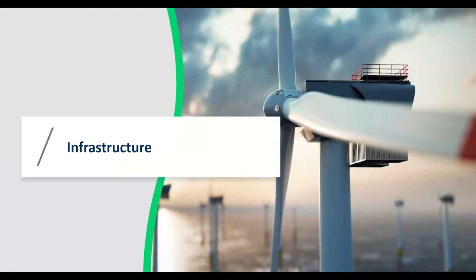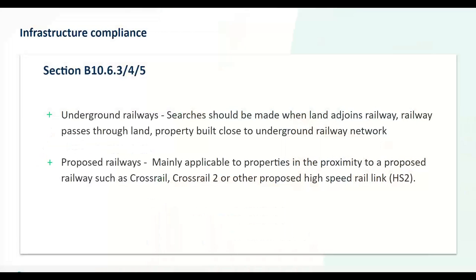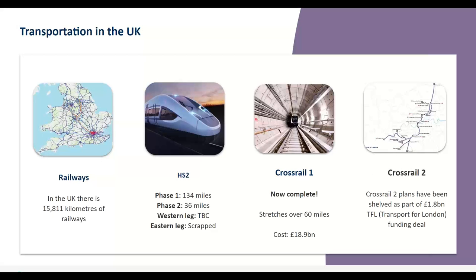Moving on to infrastructure. This is where it gets a little more grey, because there isn't a Law Society practice note on things like energy infrastructure or railway, but there is some guidance within the conveyancing handbook. Depending on where the property is, there is guidance in the conveyancing handbook regarding railways in particular. In the UK there are over 15,000 kilometres of railways in the country. You've got the very old railway lines, and then you've got big infrastructure projects like HS2, which are affecting certain parts of the country. You also have Crossrail 1, and Crossrail 2 which has been shelved but has safeguarding areas that have already been purchased by TFL.